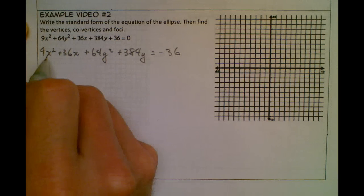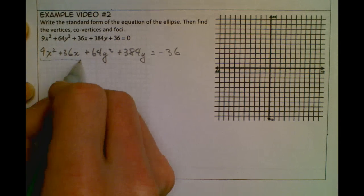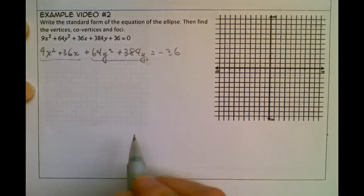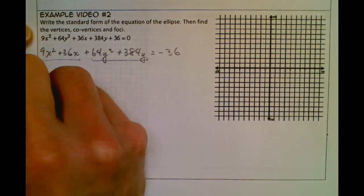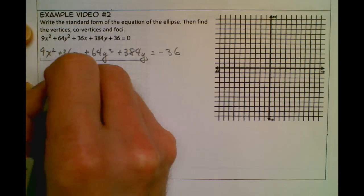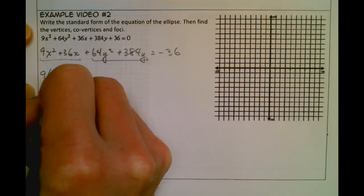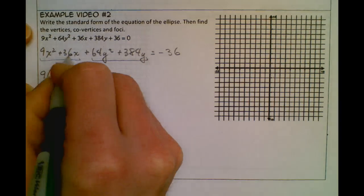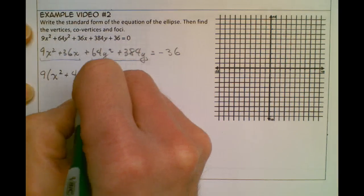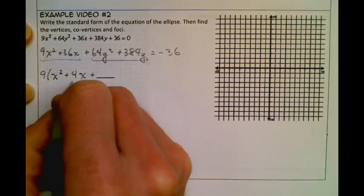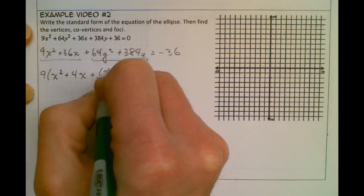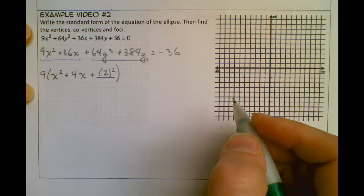Now remember, in order to complete the square for the x's and for the y's, I'm going to have to factor out the leading coefficient. So I have to factor out a 9 from the x² term and the x term. So I have 9 times (x² + 4x), the 36 divided by 9 becomes 4. And then I'm going to put in my placeholder here, take half of 4, so that's 2, and square it, so that's what I need to do to complete the square.